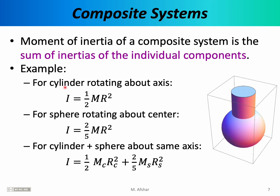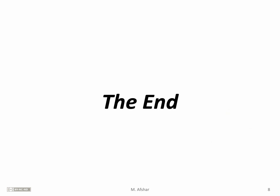By looking at the table in your book, you can find that for a cylinder rotating about its axis, the moment of inertia is one half mr². For a sphere rotating about an axis passing through its center, it is two-fifths mr². So if you wanted to rotate this entire composite object, the moment of inertia would be given by the sum of these two terms. And that's the end of this lecture — thank you for your attention.